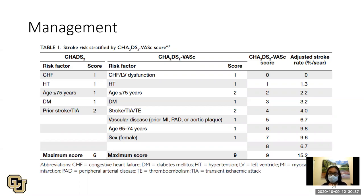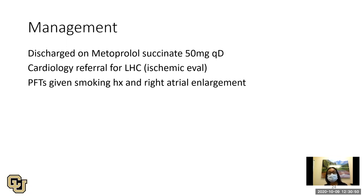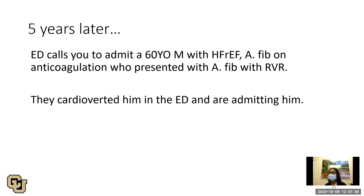Outpatient plan: send the patient home on metoprolol succinate, titrate accordingly, give a cardiology referral for left heart catheterization as ischemic evaluation, and get PFTs given his smoking history and right atrial enlargement. Five years later, the ED calls to admit this now 60-year-old man — HFrEF, AFib on anticoagulation — presenting with rapid ventricular response. His diseases have progressed; he's on a DOAC after his CHA2DS2-VASc score went up. The ED cardioverted him.